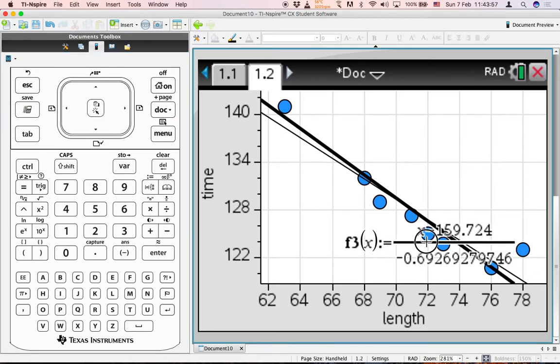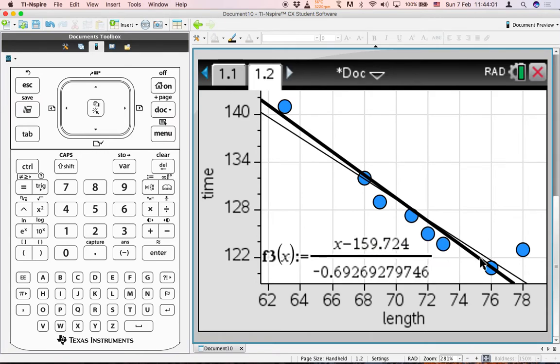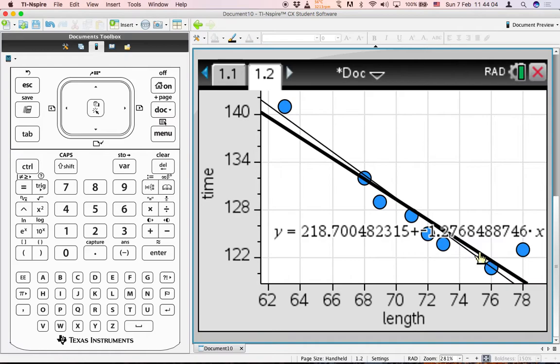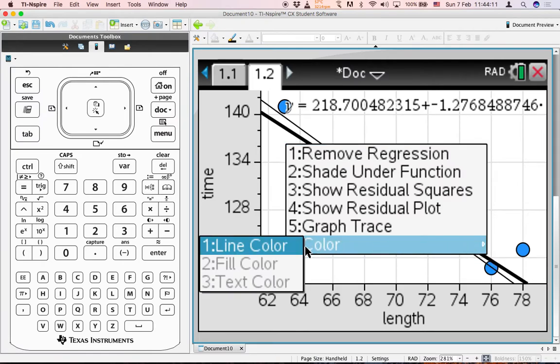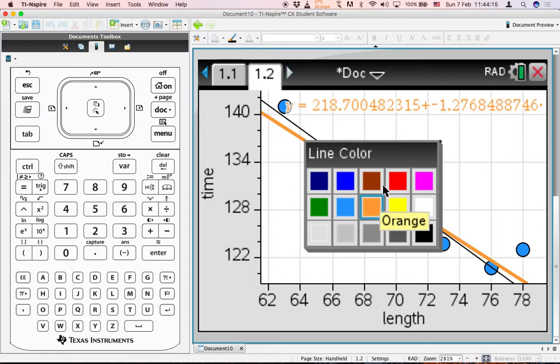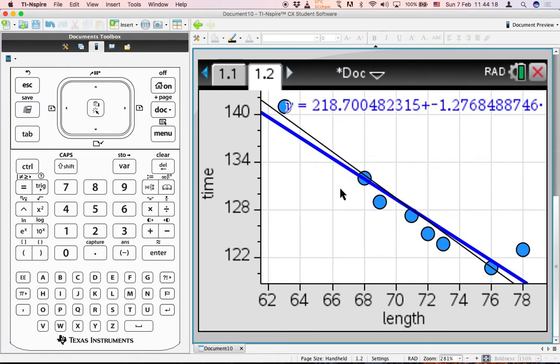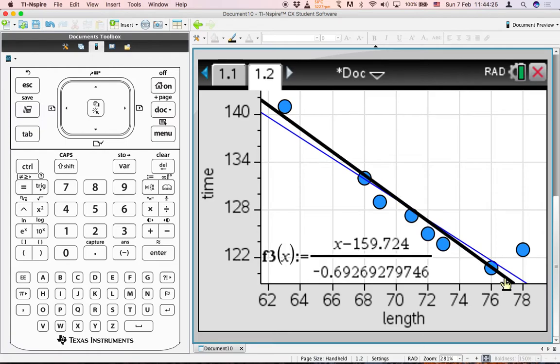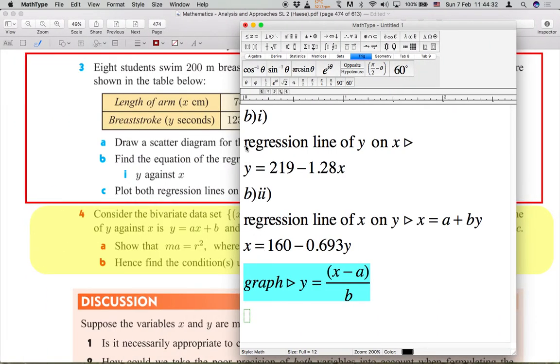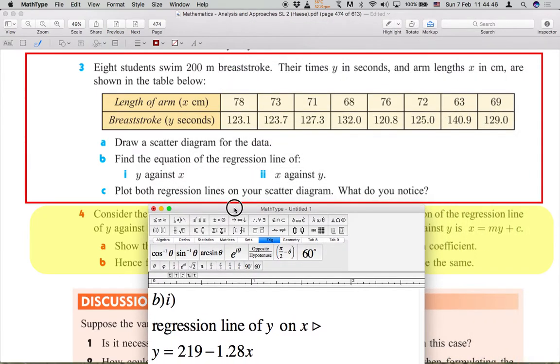So we may take time to arrange the label and we may swap the equation and we may also adjust the color. Maybe we can use blue for the Y against X regression line and using black for X against Y regression line. And for the equations, in your answer you should mention the highlighted equation. This is for our GDC use only.